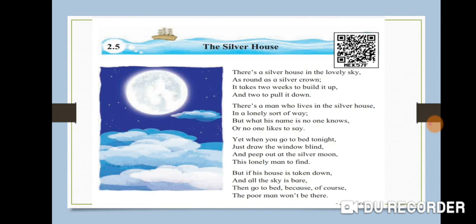First I read out the whole poem. Students, you have to listen carefully. There is a silver house in the lovely sky as round as a silver crown. It takes two weeks to build it up and two to pull it down. There is a man who lives in the silver house in a lonely sort of way. But what his name is, no one knows or no one likes to say.